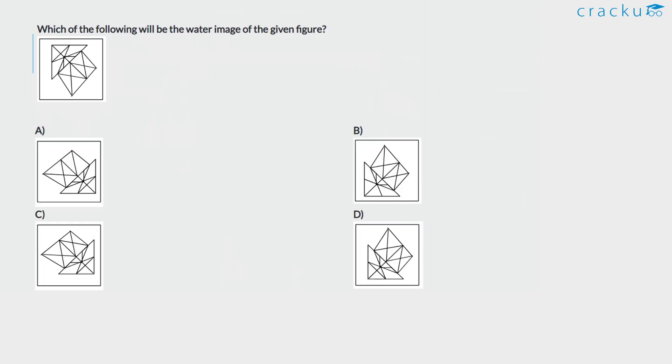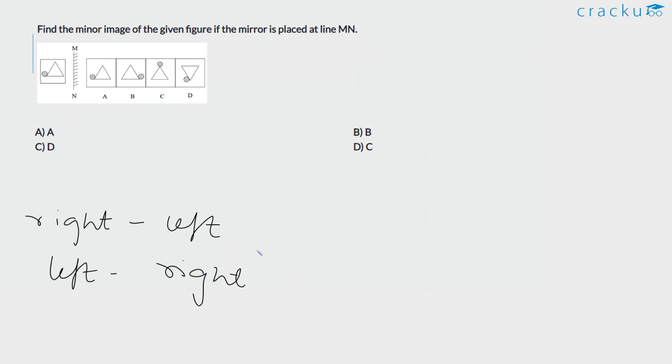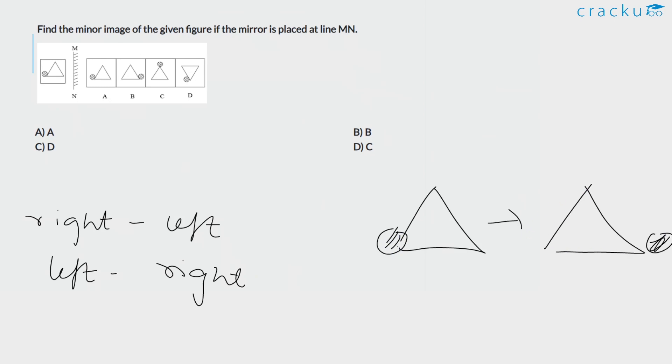Which of the following will be the water image of the given figure? The water image answer figure will be upside down relative to the question figure. Therefore, the answer is option B. Next, find the mirror image of the given figure if the mirror is placed at line MN. The mirror image answer will be right to left and left to right. The answer figure will be the reverse of the question figure. Therefore, the answer is option B.